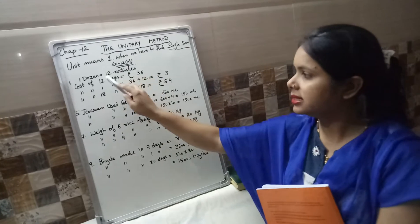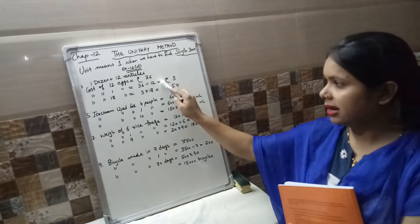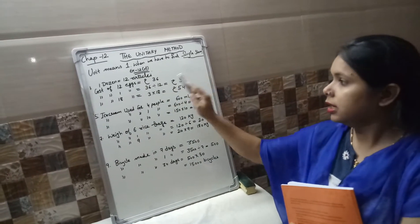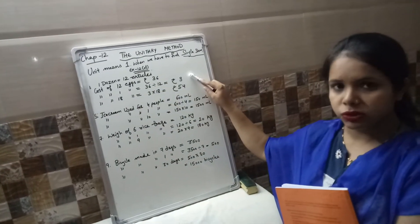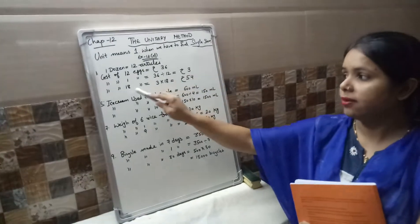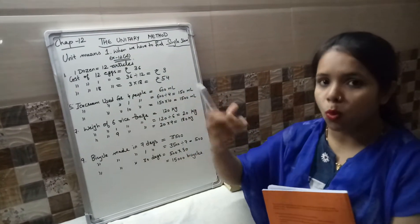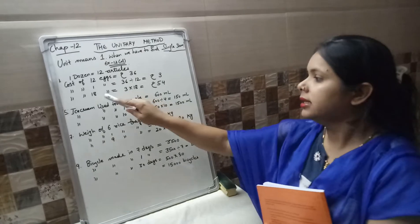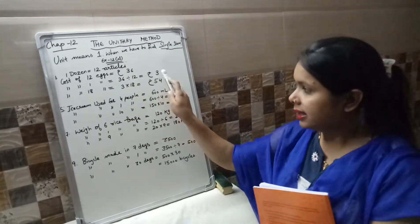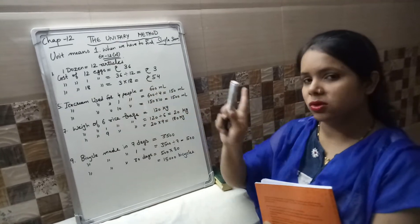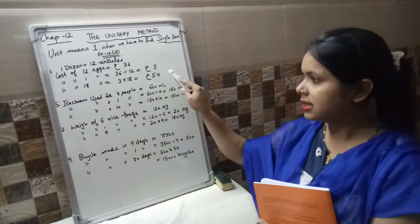Cost of 1 egg is 36 divided by 12. What will come? 3, because 12 times 3 is 36. Now you are able to tell, because cost of 1 egg is rupees 3. And you have to tell cost of 18X. That means more eggs you have to purchase, so 3 multiplied by 18. Cost of 18X is rupees 54.